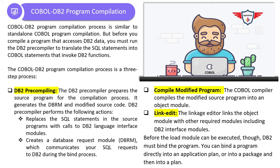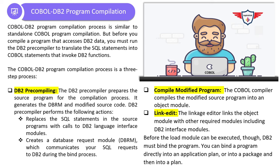The entire COBOL DB2 compilation process is divided into three stages. The first is the DB2 pre-compiling stage, where the source program is prepared for compilation. Two major actions are performed: first, SQL statements in the source program are replaced with calls to the DB2 language interface module; second, a database request module (DBRM) is created from the SQL statements extracted from the source program. The output of the pre-compile stage is the DBRM, which feeds into the bind process, and a modified source code which feeds into the normal COBOL compilation process.